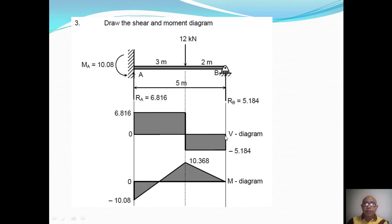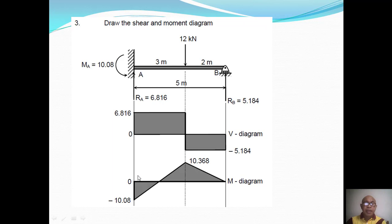Drawing the moment diagram: at A the moment is -10.08 kN·m. Adding the area of the shear rectangle (6.816 × 3) gives +10.368 kN·m. Then subtracting the rectangle area (5.184 × 2) closes to zero at B. The point of inflection (where moment = 0) is found by proportion: x/10.08 = (3 - x)/10.368, giving x = 1.48 m from the fixed support.